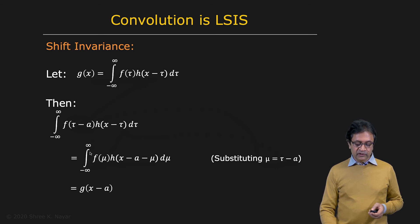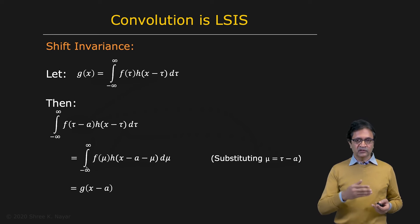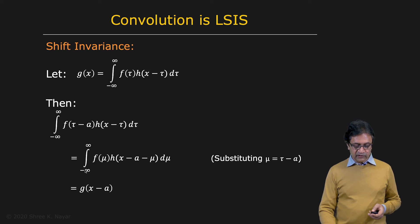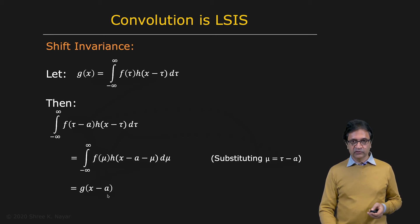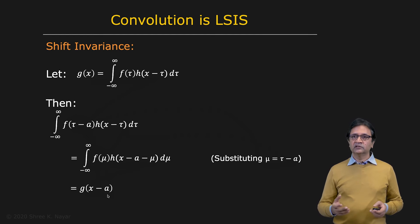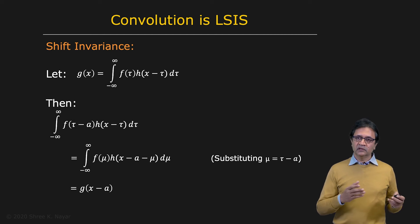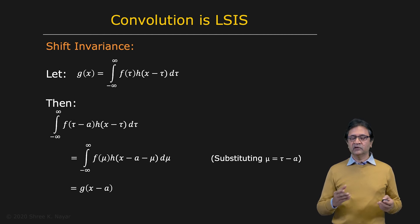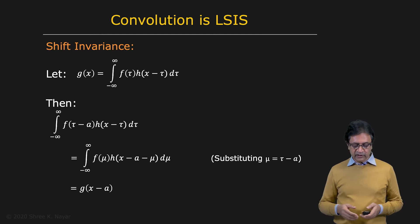We substitute that in the expression, and you get f of mu times h of x minus a minus mu. The limits of the integral are still minus infinity to infinity because a is a finite number. And this is exactly equal to g of x minus a. So you shifted the input by a, and in doing so you simply shifted the output of the convolution by a. Therefore, convolution is shift invariant. Since convolution is both linear and shift invariant, convolution is a linear shift invariant system.